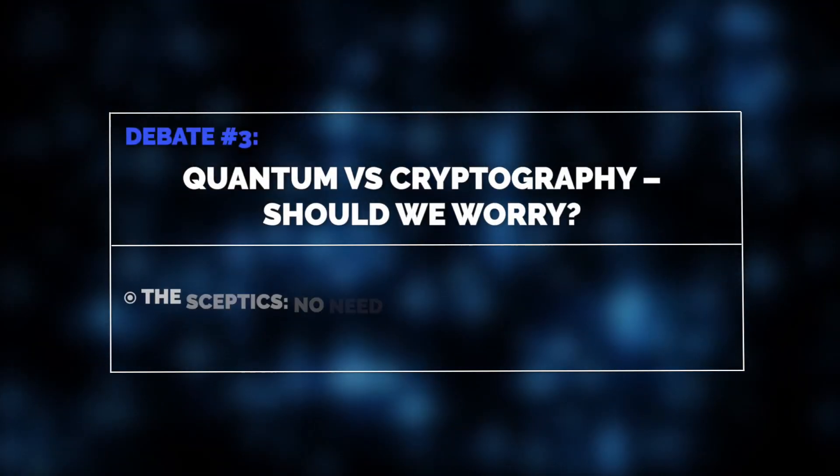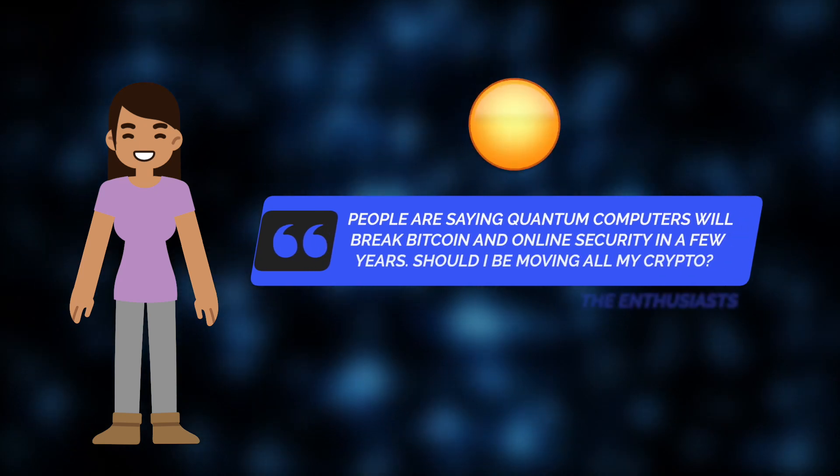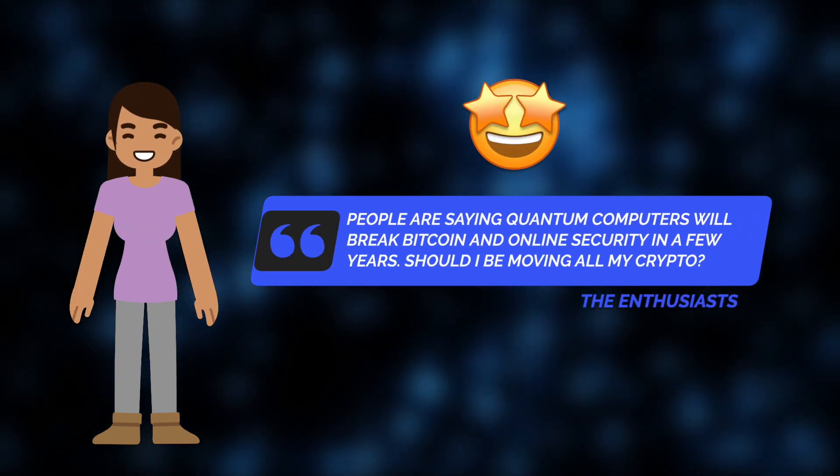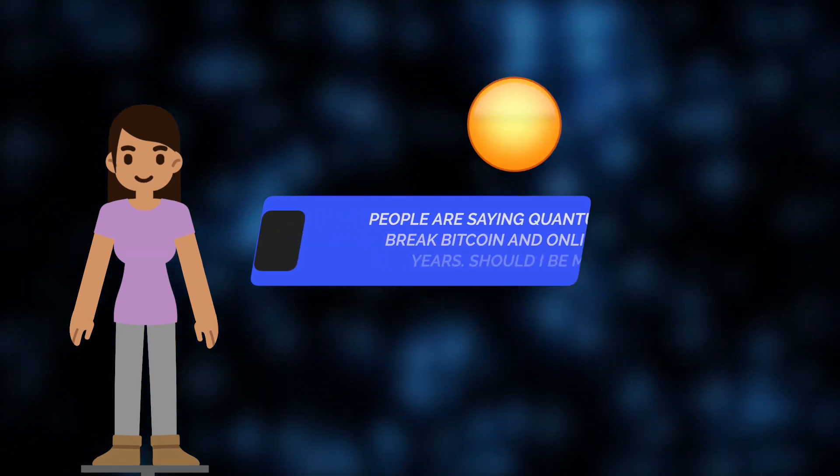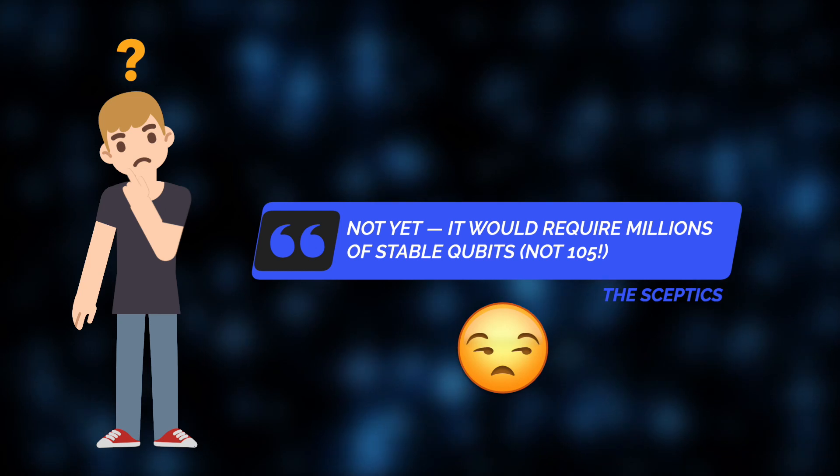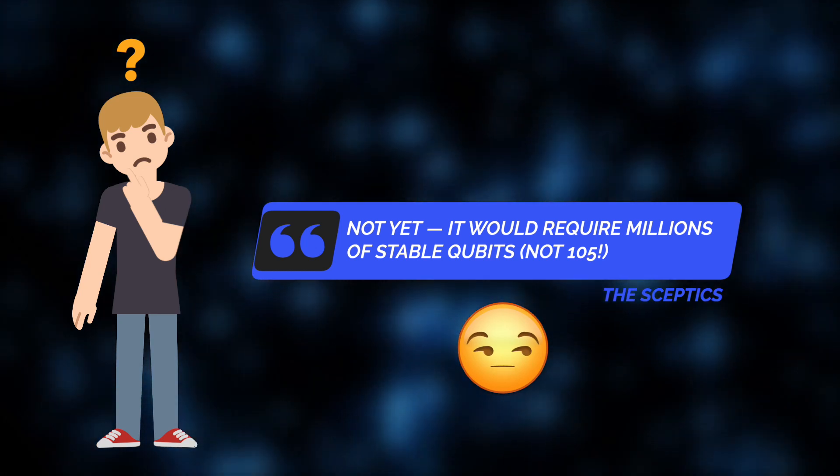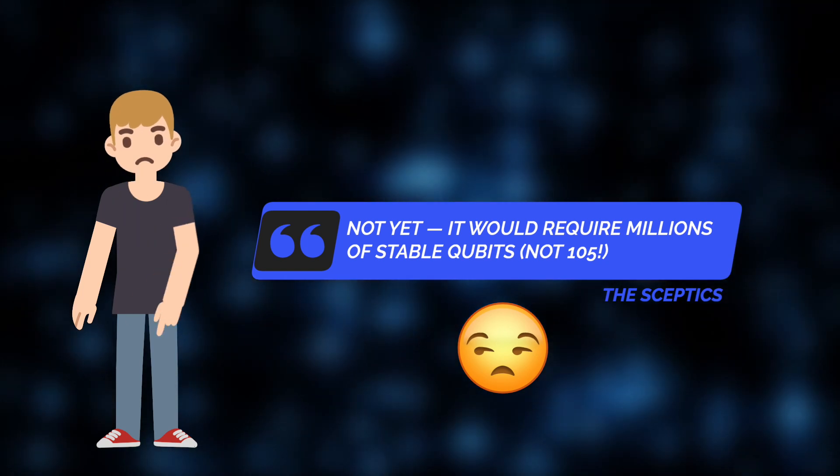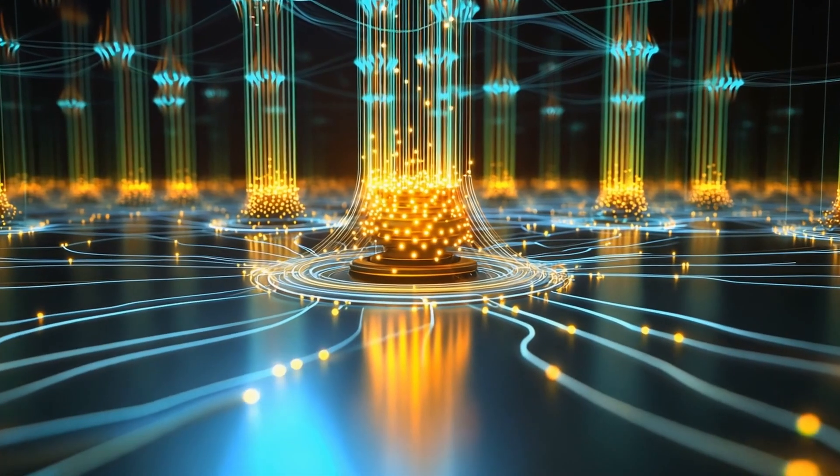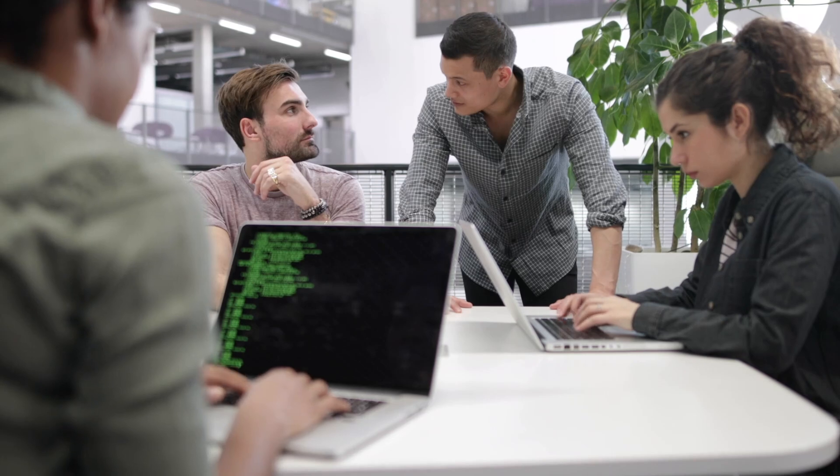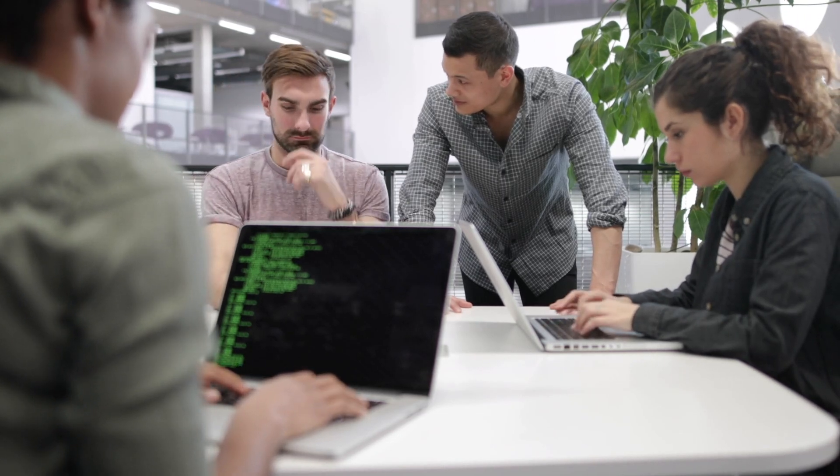Next, let's explore quantum computing and cryptography. Jelvix enthusiasts are already raising concerns that quantum computers could soon break encryption, potentially making Bitcoin and other online security measures obsolete. Not yet, the skeptics reassured. Breaking RSA encryption requires millions of stable qubits, not 105. Plus, post-quantum cryptography is already in development. We just have to wait and see. And while quantum computing might eventually have the capacity to break some encryption, by that time, the companies and governments will already come up with quantum-resistant encryption.